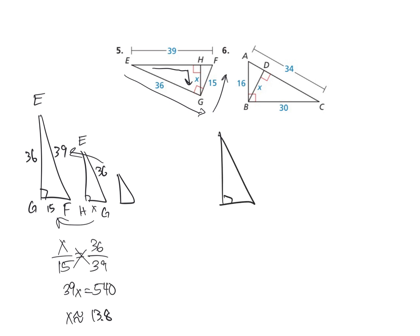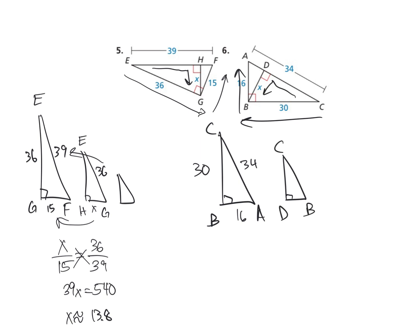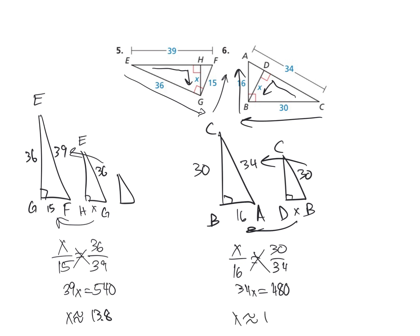Number 6 is going to be C to B to A. That's 30, 16, and the hypotenuse is 34. The next size will be C to D to B. C to D we don't know, D to B is X, and B to C is 30. I don't need to do the smaller one. So X is to 16 as 30 is to 34. So 34X equals 30 times 16 which is 480. Divide 480 by 34, and X is approximately 14.1.